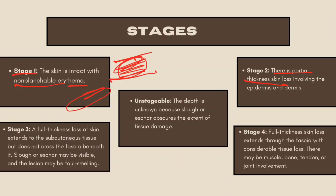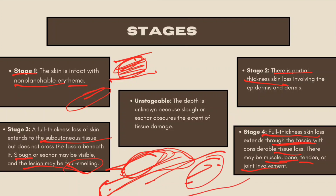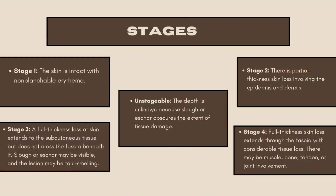Stage 3 extends to the subcutaneous tissue but does not cross the fascia beneath it — muscles are not affected. The lesion may be foul-smelling. Stage 4 is full thickness skin loss extending through the fascia with considerable tissue loss, affecting the joint, bone, muscle, and tendon — the bone itself is affected.